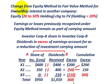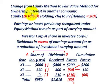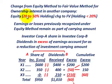What we're going to be going over here is a change from the equity method to the fair value method for an ownership interest in another company. Corporation A has purchased an ownership interest in Corporation B, and they would have been using the equity method if they had a holding interest of 20% to 50% of Corporation B. We're looking at the case where their ownership interest is greater than 20%.